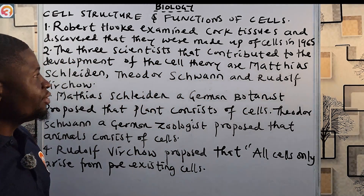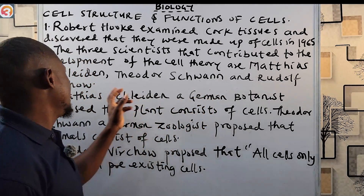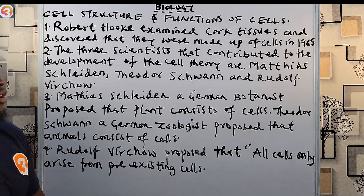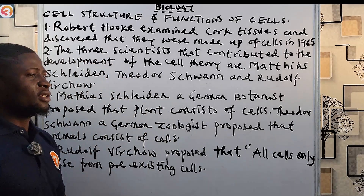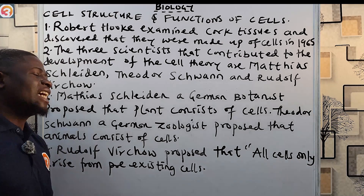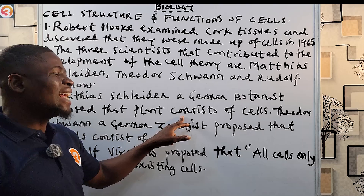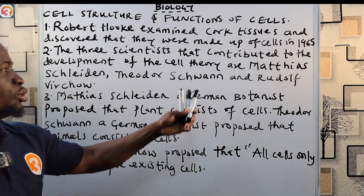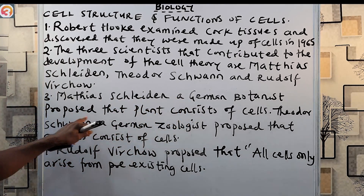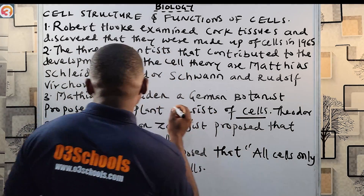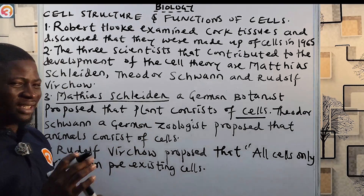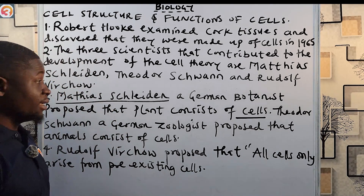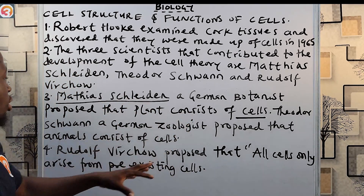Three scientists contributed to the development of the cell theory: Matthias Schleiden, Theodor Schwann, and Rudolf Virchow. Matthias Schleiden was a German botanist who proposed that plants consist of cells. You must know each of their individual contributions.